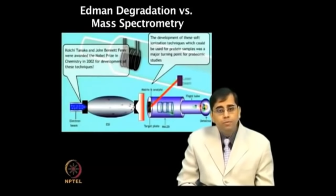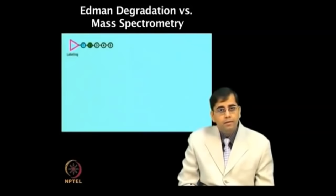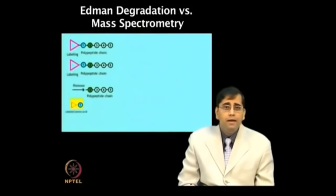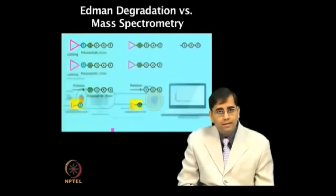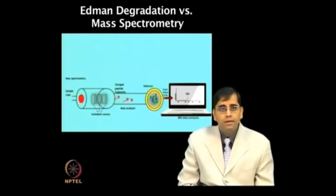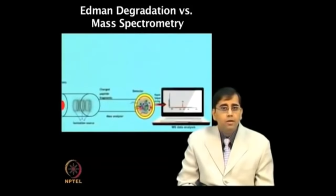Protein sequencing by Edman degradation is time-consuming and cumbersome, as several rounds of sequencing are required for analysis of polypeptide chains. However, peptide sequencing by mass spectrometry is much faster and allows a large number of polypeptide samples to be analyzed in a short time.